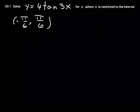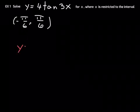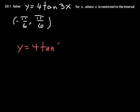Okay, everybody, let's go back to example 1 that we skipped in the beginning. We want to solve this equation, y equals 4 times tangent of 3x. Solve it for x. Where x is restricted to the interval negative π over 6 to positive π over 6.